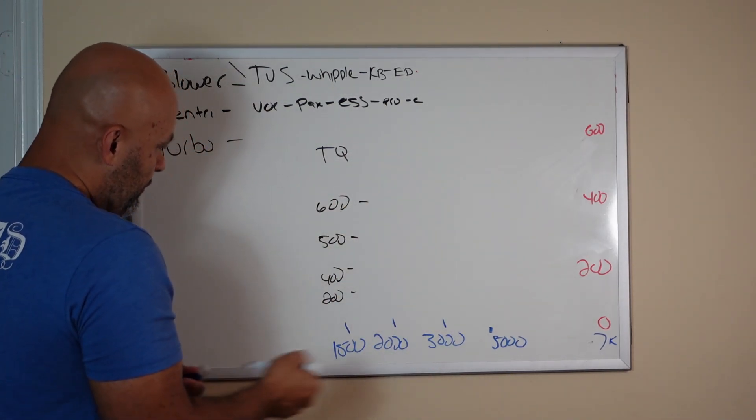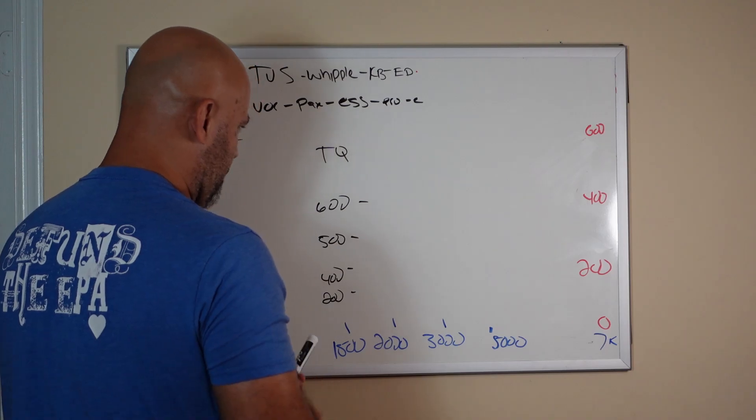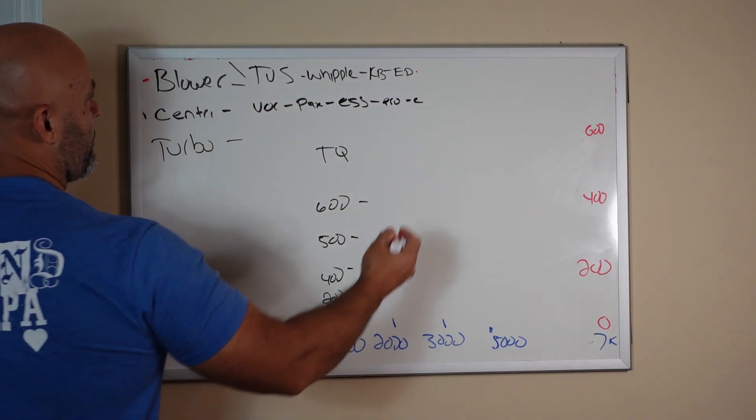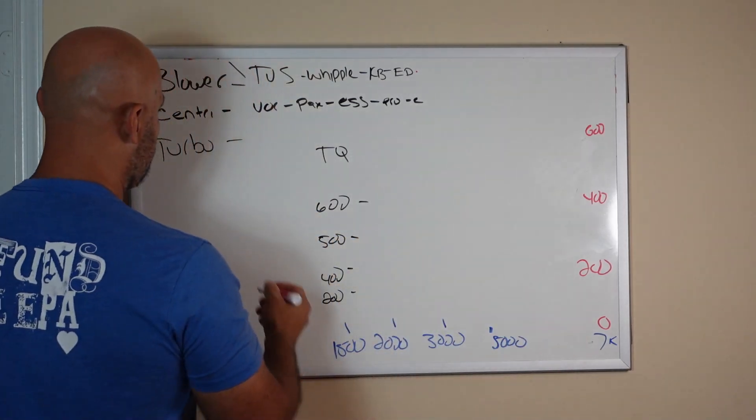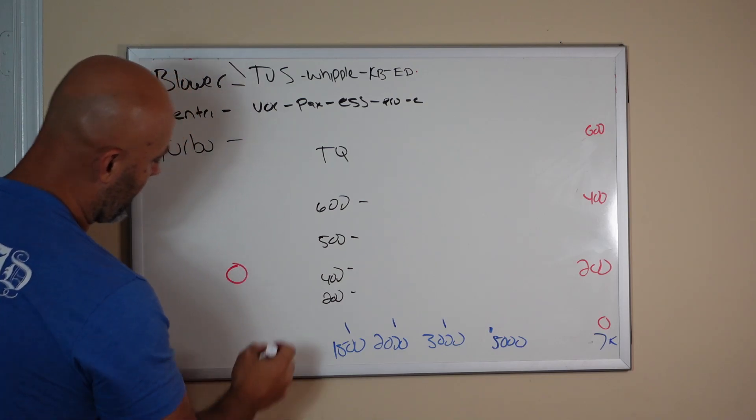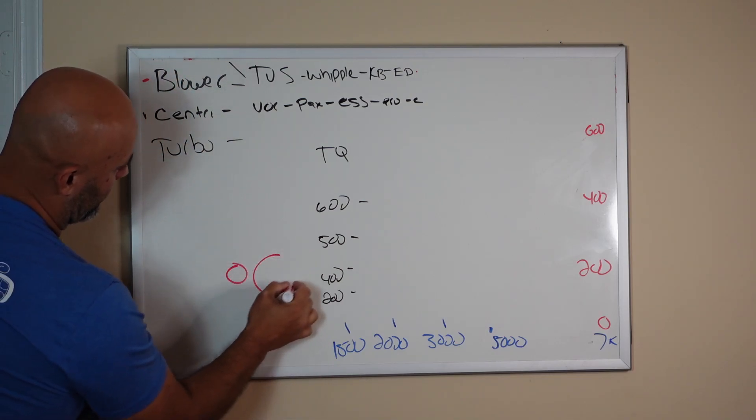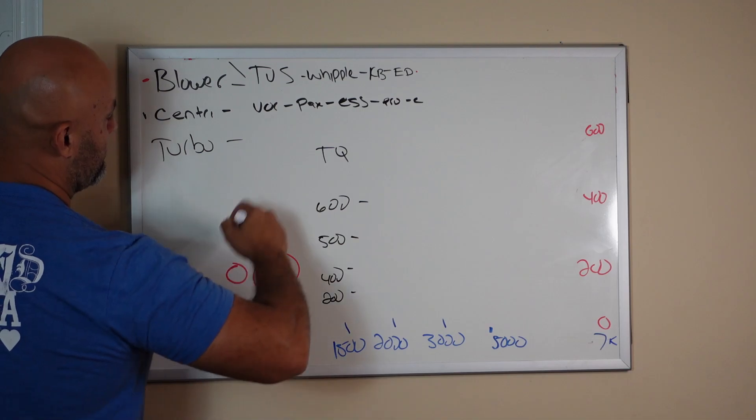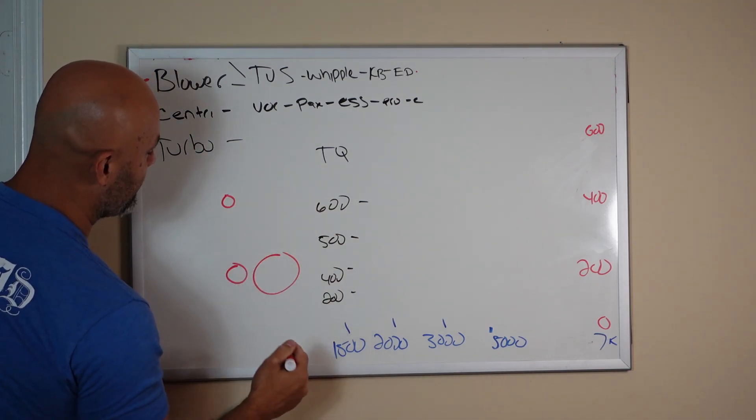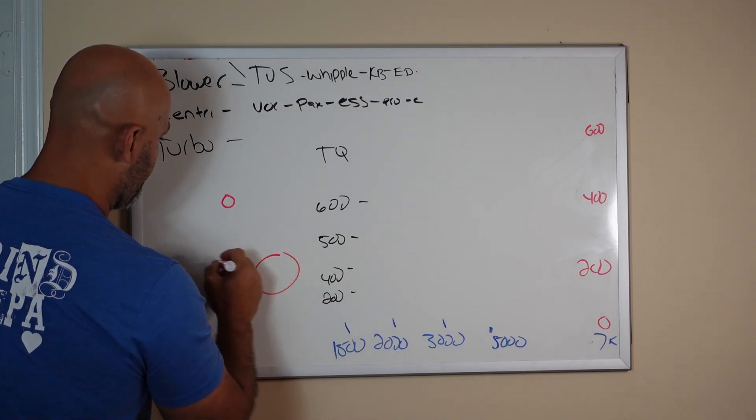But some people with centrifugal do the really most crazy thing in my opinion. They get a thing called a torque booster. A torque booster is basically an overdrive. So if your balancer is like this stock, well you get one that's bigger so that it's spinning the supercharger pulley faster.